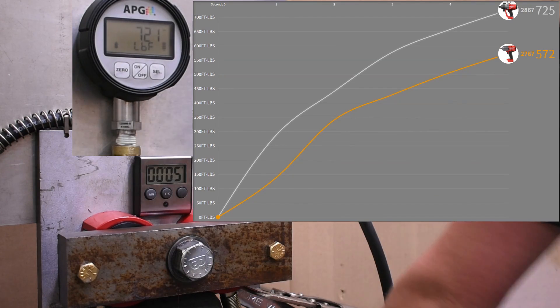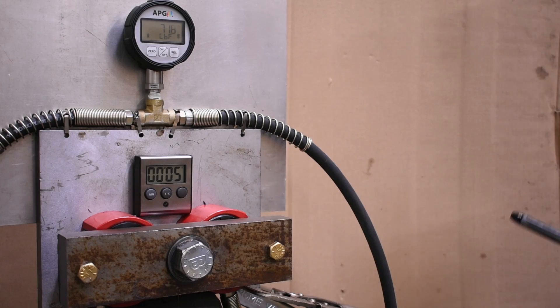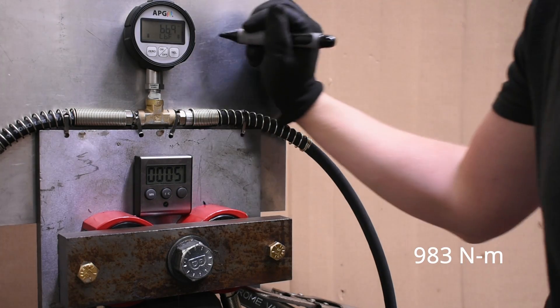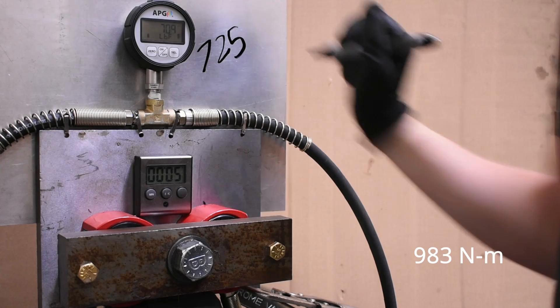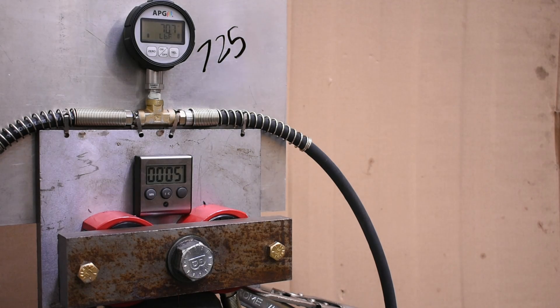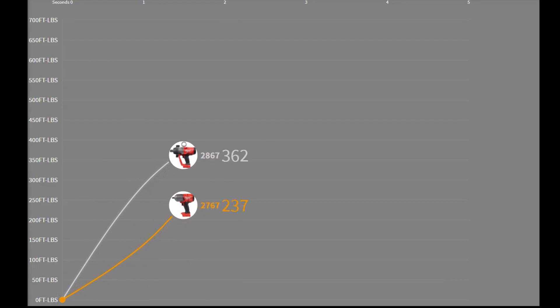So that's a monstrous 725 foot-pounds in just five seconds. This thing makes 15-second best case scenario high torque type power in just five seconds. At no point on this graph are these tools looking similar at all.